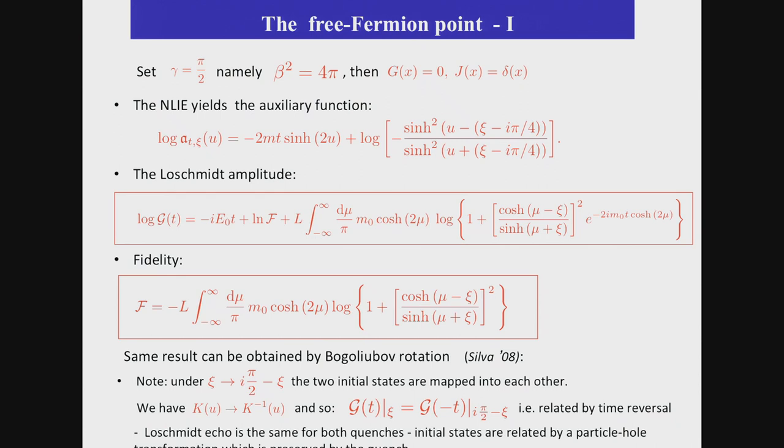But to test them, we'll first do the case of free fermions. It's just a sanity check. We'll choose beta squared equals to 4π, in which case the Sine-Gordon model becomes a free model. We can solve explicitly the auxiliary function, plug it in, the expression for the Loschmidt echo, and get a very nice expression for the echo and for the fidelity. And, of course, since these are free field theories, we can obtain the same by doing simple Bogoliubov rotation. And Alessandro Silva did it already in 08, where he introduced many of the questions that I'm discussing here.